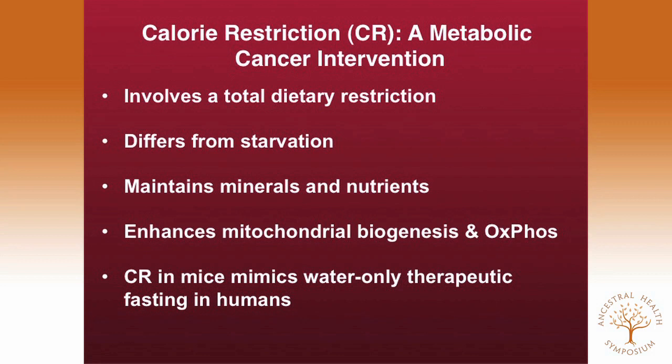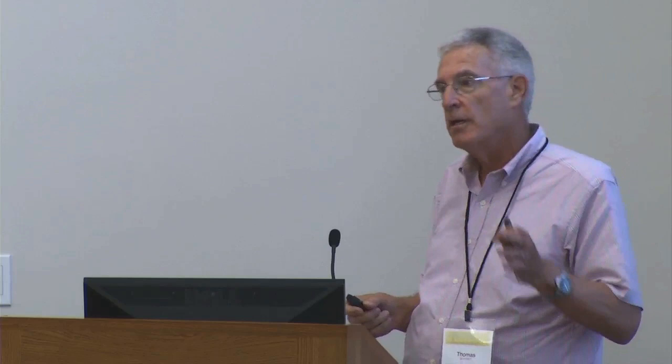Calorie restriction involves total dietary restriction. It differs from starvation in that calorie restriction can maintain adequate levels of minerals and nutrients. Done correctly with correct biomarkers, it will enhance mitochondrial biogenesis and increase the efficiency of oxidative phosphorylation. It's important to recognize that calorie restriction in the mouse mimics therapeutic water-only fasting in humans, because the basal metabolic rate of the mouse is seven times that of the human. The biomarkers for calorie restriction are reduced blood glucose and elevated ketone bodies.